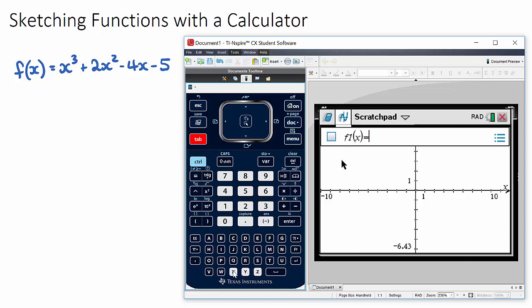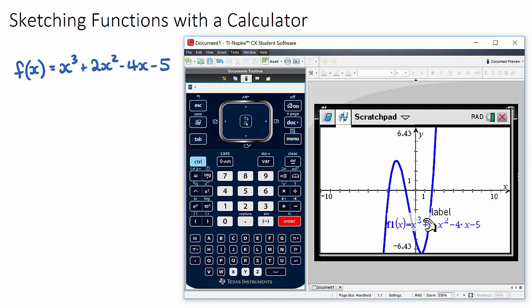Let's type in x cubed, so x to the power of 3, and then plus 2x squared minus 4x minus 5. This is my cubic function here.